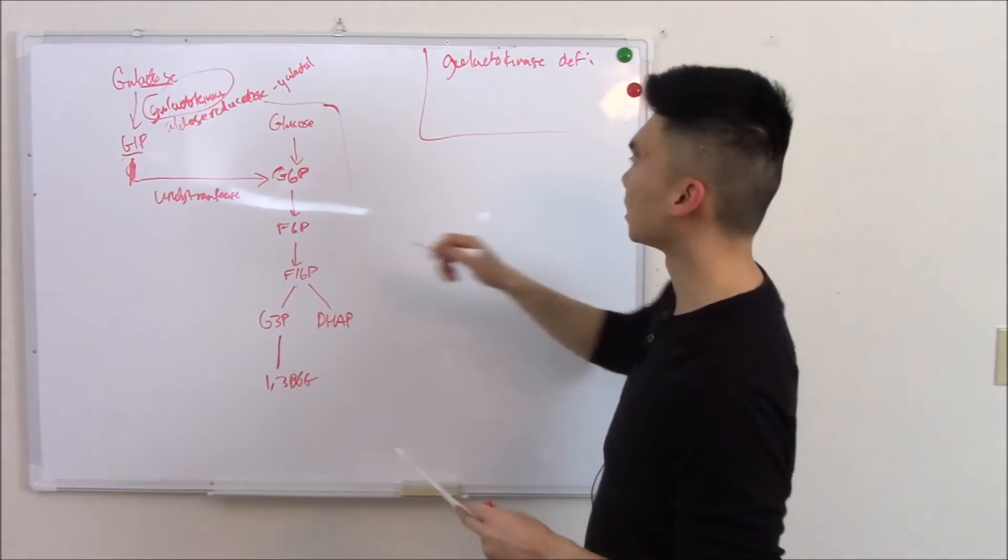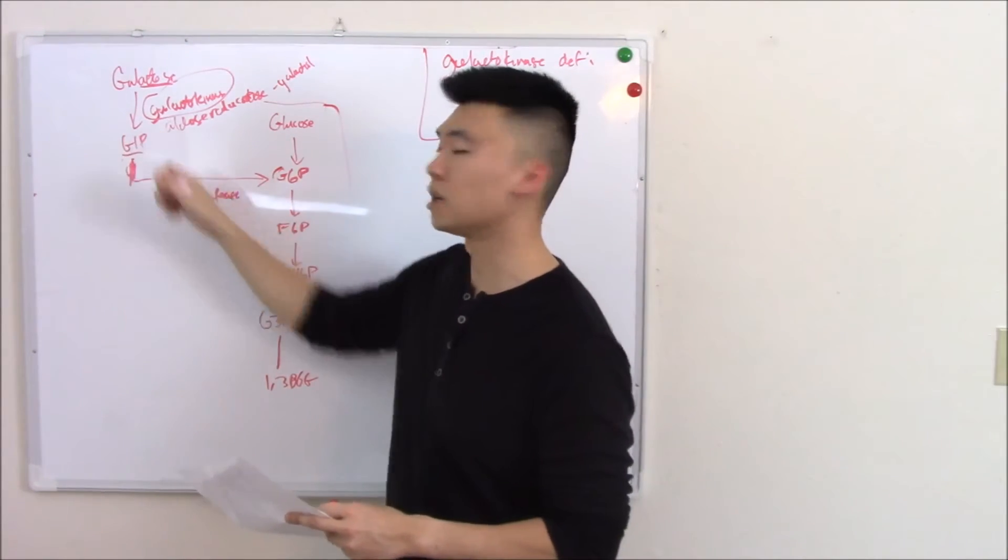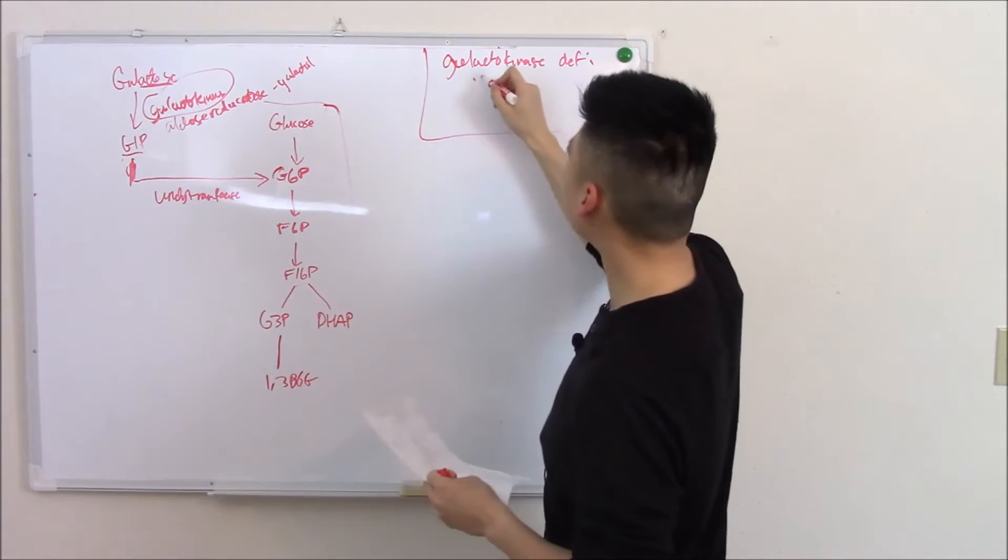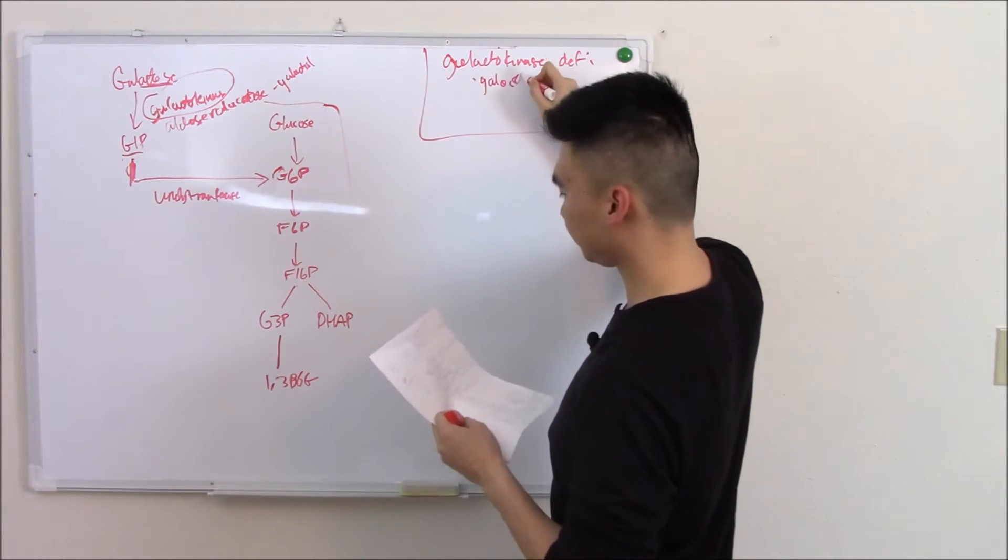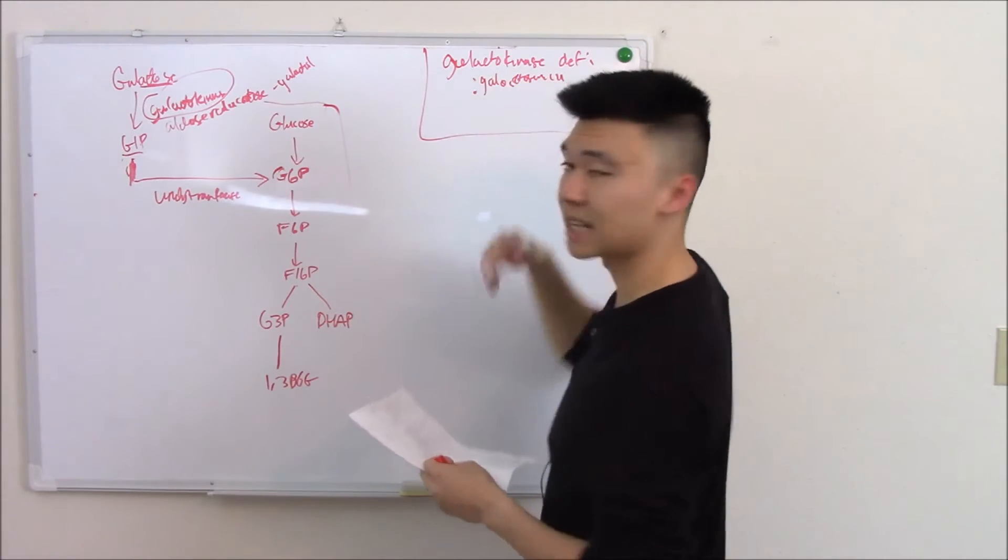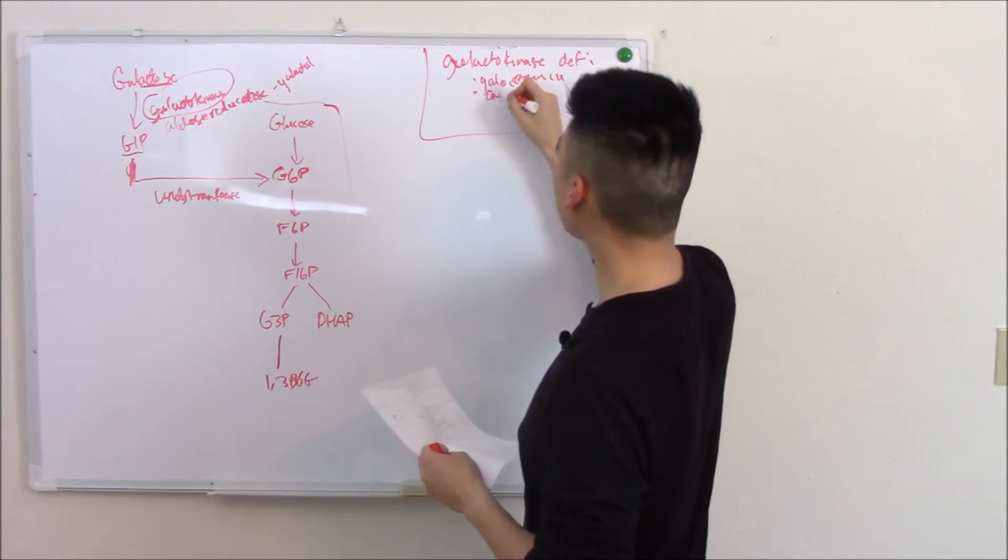So if you have galactose deficiency you can't phosphorylate it. You can't trap it in a cell. So that galactose is going to leave. You're going to have galactosemia. You're going to have osmotic damage to your eyes and cause cataracts.